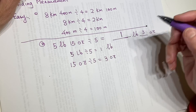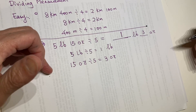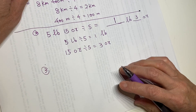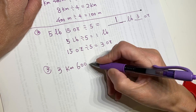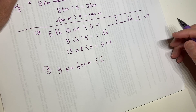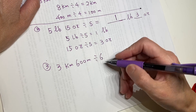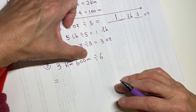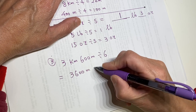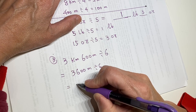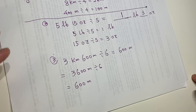Question number three — we make it more complicated, but within the metric system. Question number three is 3 kilometers, 600 meters divided by 6. You can do this several ways. One method for the metric system: you can turn it all into meters. 3 kilometers, 600 meters becomes 3,600 meters divided by 6, which equals 600 meters. The result is 600 meters — just so easy, so simple.